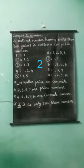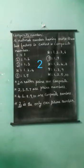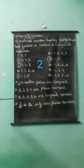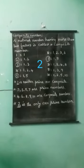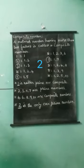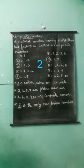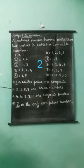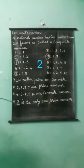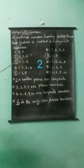Then the last point: 2 is the only even prime number. See the number 2 — 2 is the only even prime number here. Among the prime numbers 2, 3, 5, and 7, the numbers 3, 5, and 7 are odd numbers, while 2 is the only even number. So 2 is the only even prime number. Understood, students?